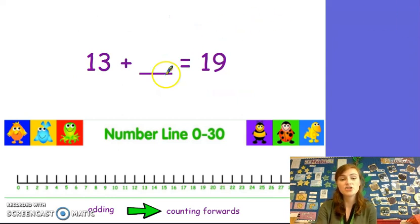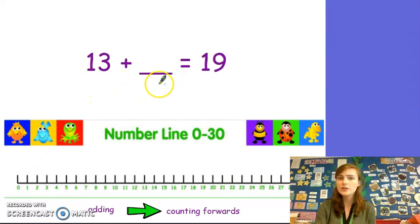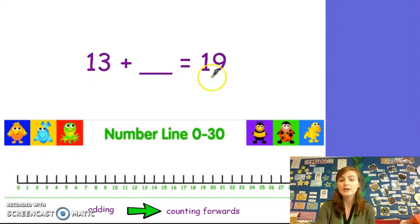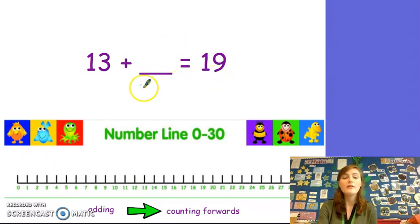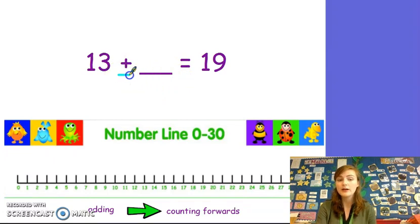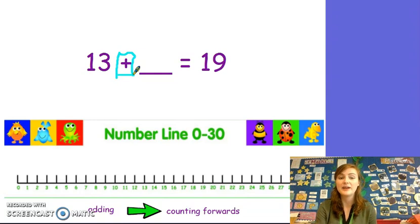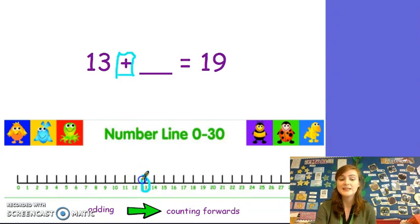Here we have an addition number sentence. 13 plus... oh! There's a number missing. We don't know how many we add to 13 to get our total of 19. Let me show you how we can figure out the missing number in our addition sentence. Firstly, we know that we are counting forwards because I can see a plus sign. I know that I am adding. I have 13. Let's start at 13 on my number line. I find it easy to draw a circle around the number so I don't forget where it is.